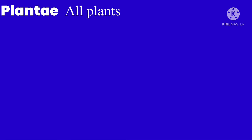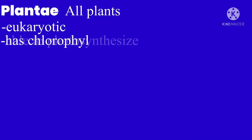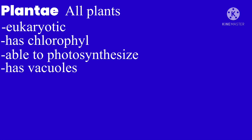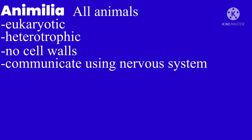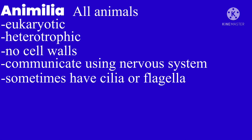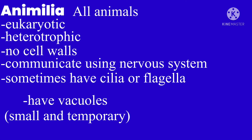Now for kingdom Plantae, which is all the beautiful, glorious, and deadly plants in the world. They are multicellular eukaryotes. They have chlorophyll and are able to photosynthesize. They have vacuoles to support them and are autotrophic, meaning they can make food for themselves. They have cell walls made of cellulose. And finally, kingdom Animalia — all of the beautiful, glorious, deadly animals. They are multicellular eukaryotes, heterotrophic, don't have cell walls, and communicate using a nervous system, which I will expand on later. They sometimes have cilia or flagella, and have vacuoles, but they're small and temporary.